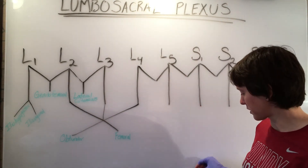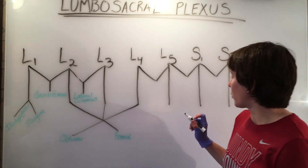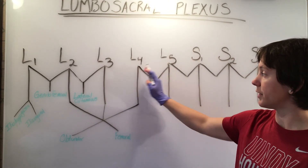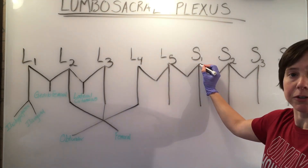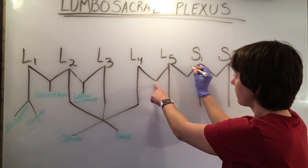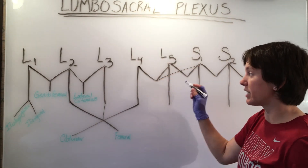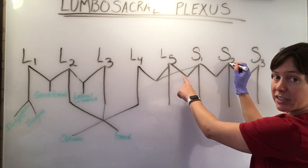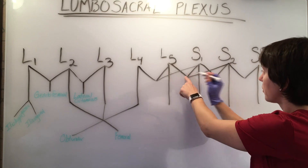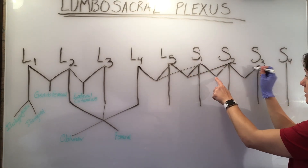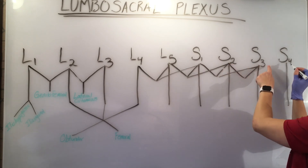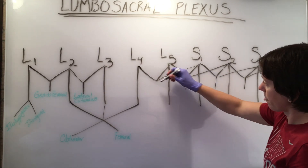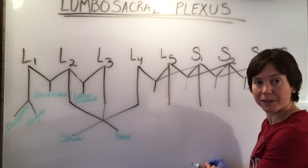Now moving on to the sacral portion. For each V, count three spaces — one, two, three — and draw a line from there to the first point of your V. Repeat this all the way down: count one, two, three, and connect to the next V point. Do this again — one, two, three, connect — and one more time — one, two, three, connected. These lines will represent some of the major nerves of the sacral plexus.